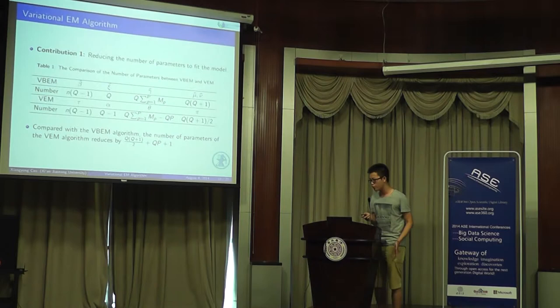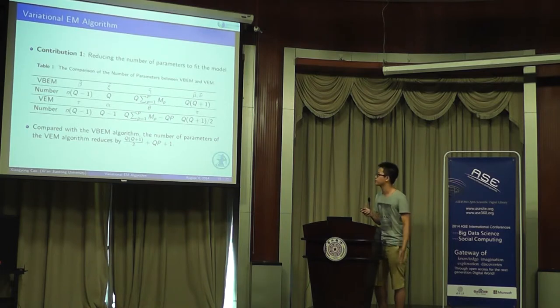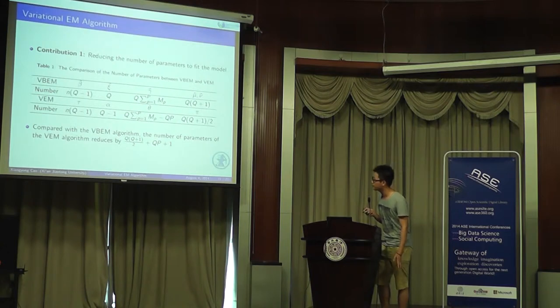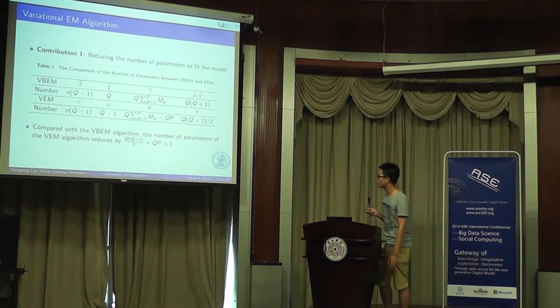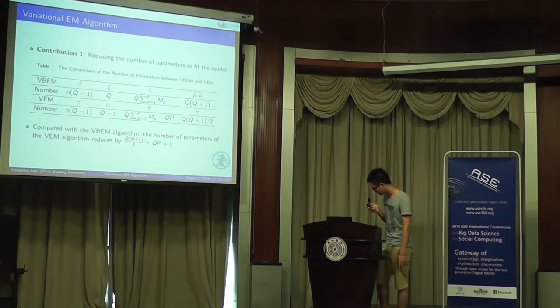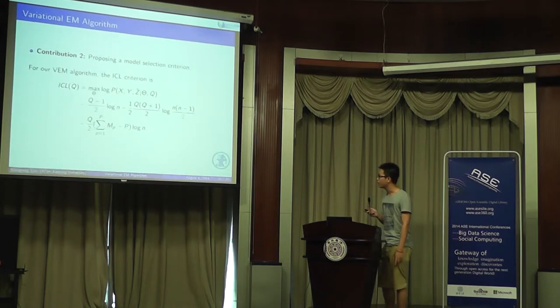Compared with the original variational-based EM algorithm, our variational EM algorithm has two contributions. The first is that we reduce the number of parameters to fit the model. The number of parameters is summarized in table one. The top is VBEM and the bottom is VEM. From the table, we can see that compared with VBEM, our VEM reduces the number of parameters by Q times Q plus 1, half plus QP plus 1.